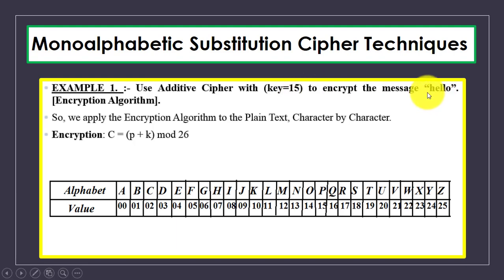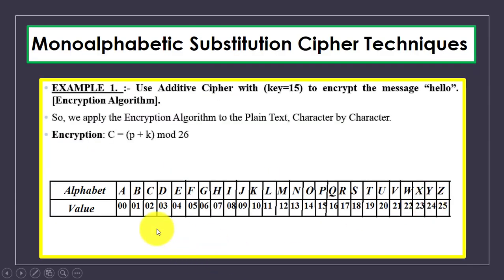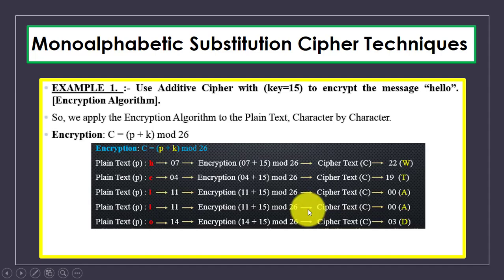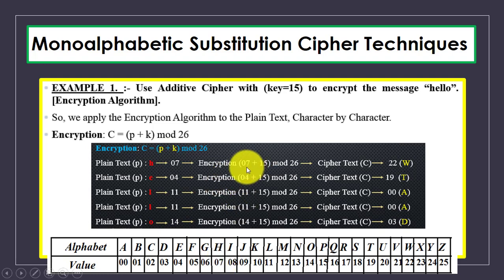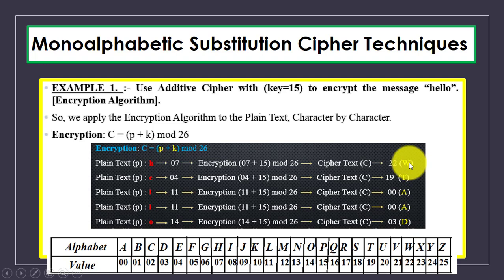From the alphabet table: H = 7, E = 4, L = 11, O = 14. For H: (7 + 15) mod 26 = 22, and at position 22 we have W. For E: (4 + 15) mod 26 = 19, and at position 19 we have T. So H encrypts to W and E encrypts to T.